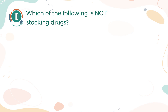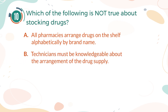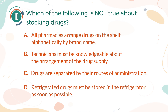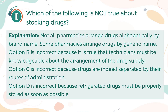Number 10. Which of the following is not true about stocking drugs? A. All pharmacies arrange drugs on the shelf alphabetically by brand name. B. Technicians must be knowledgeable about the arrangement of the drug supply. C. Drugs are separated by their routes of administration. D. Refrigerated drugs must be stored in the refrigerator as soon as possible. The correct answer is A. Not all pharmacies arrange drugs alphabetically by brand name; some pharmacies arrange drugs by generic name. Option B is incorrect because it is true that technicians must be knowledgeable about the arrangement of the drug supply. Option C is incorrect because drugs are indeed separated by their routes of administration. Option D is incorrect because refrigerated drugs must be properly stored as soon as possible.